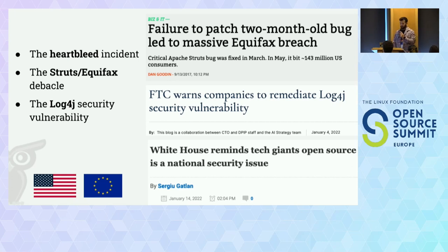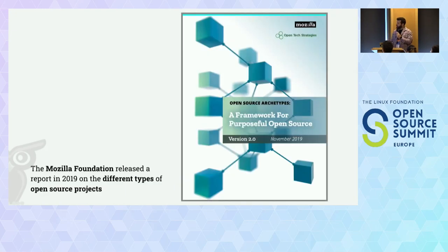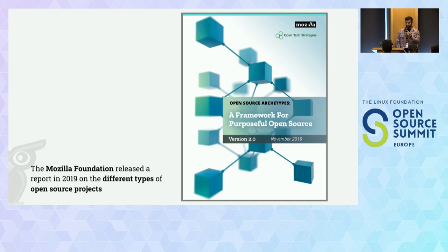The US issued a directive mandating more software supply chain security. And it looks like the European Union is also now working on similar legislation and guidelines to avoid these problems. To address this challenge, we need to understand how open source software is built. This typically involves an open source project, and there are different types of open source projects.